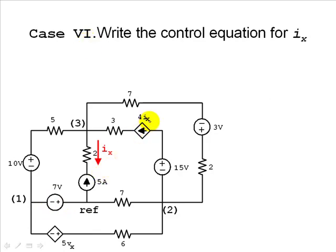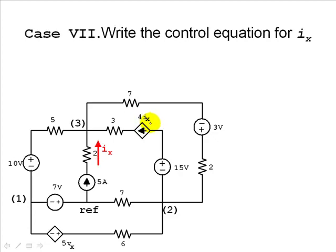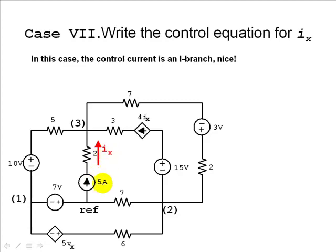Case 6: the current controlling this current source is the current in an I branch — or really an RI branch, but the distinction doesn't matter. The control current is the current in an I branch, which is very nice. The equation for IX is simply IX equals negative 5, meaning this current is negative 20 amps. Case 7: the controlling current is again the current in an I branch, so that current is just 5 amps. IX equals 5, and this current would be 20 amps.